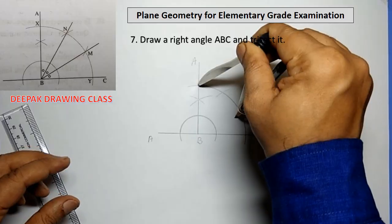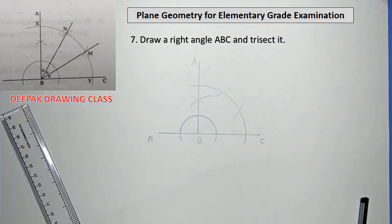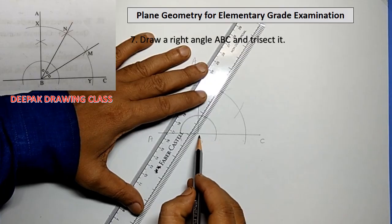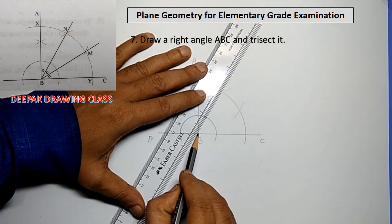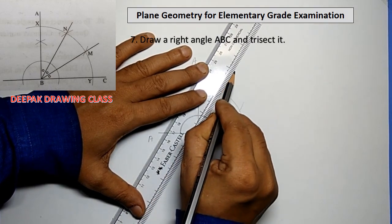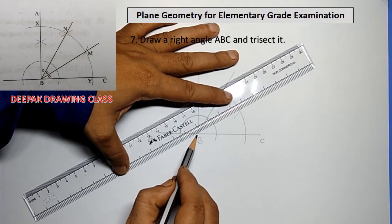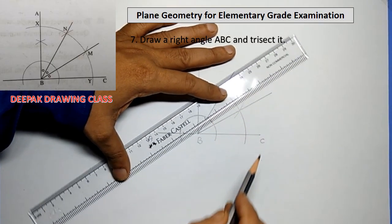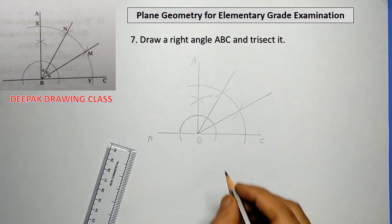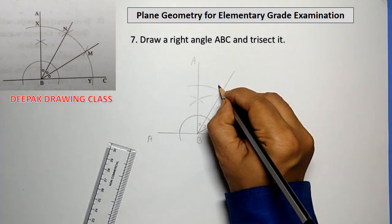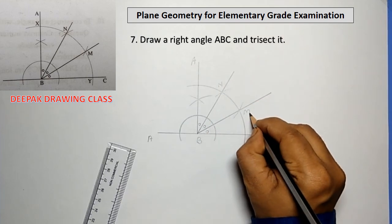With the same radius and center X, draw an arc intersecting arc XY at point M. Draw lines BM and BN.